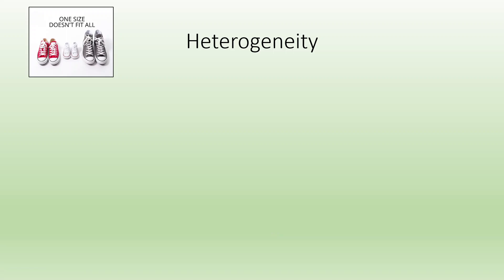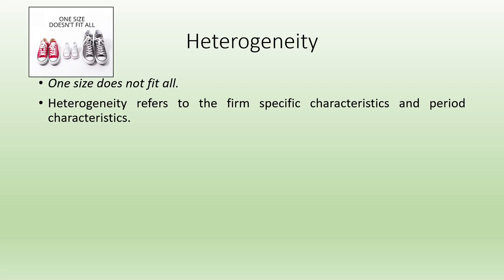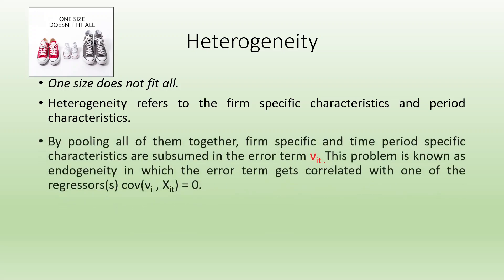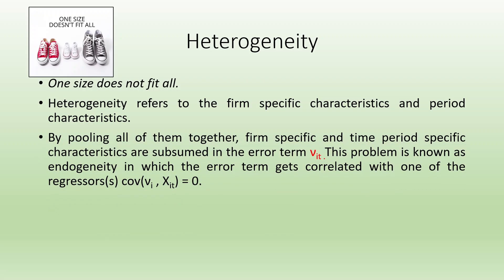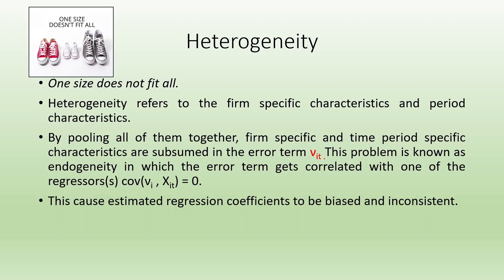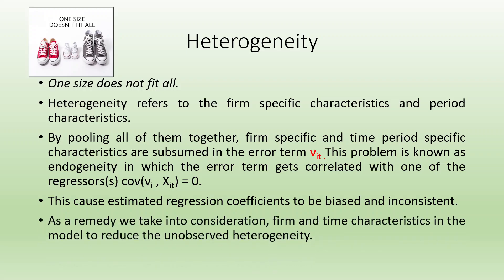Why is this necessary? In pooled OLS, we assumed one size fits all — but this is not the scenario. We need to introduce the cross-section effect as well as the time effect. Heterogeneity refers to firm-specific and period-specific characteristics. By pooling all of them together, firm-specific and time-specific characteristics are subsumed in the error term V_IT. This is the endogeneity problem, where the error term gets correlated with one of the regressors, causing estimated regression coefficients to be biased and inconsistent. As a remedy, we take firm and time characteristics into consideration to reduce unobserved heterogeneity.